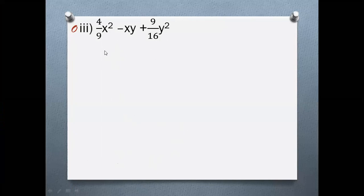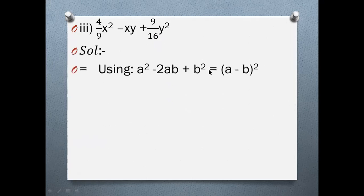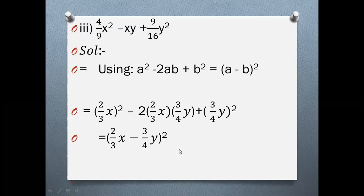Third part: 4/9·x² − xy + 9/16·y². Note that 4/9 is a perfect square of 2/3, giving (2/3·x)², and 9/16 is a perfect square of 3/4, giving (3/4·y)². The middle term has a minus sign. Check 2 × (2/3·x) × (3/4·y): the 3 cancels with 3 and 4 cancels with 4, giving xy. Using a² − 2ab + b² = (a − b)², the answer is (2/3·x − 3/4·y)².